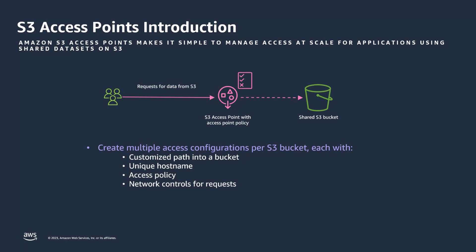Each access point has four main characteristics. First, the path to the data in the bucket — is it an entire bucket or only a subset of a bucket? A unique name for the access point. An access control policy to enforce permissions by users and S3 API actions. Finally, network controls such as internet or a specific virtual private cloud network for any request made through access points.